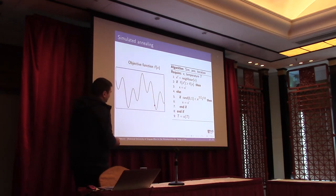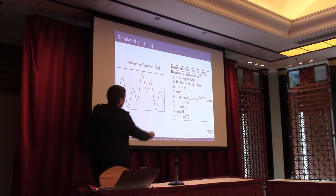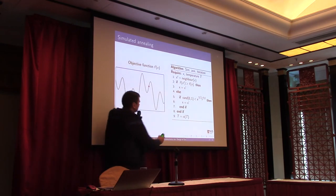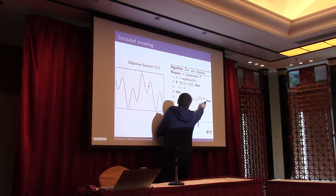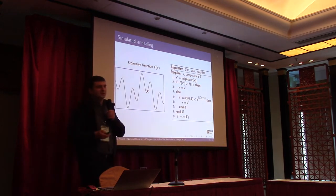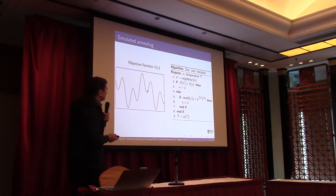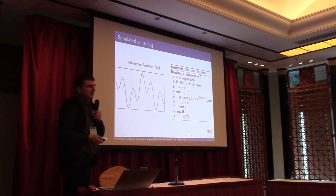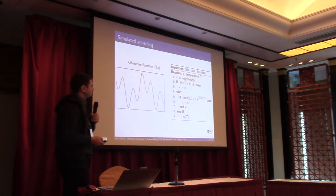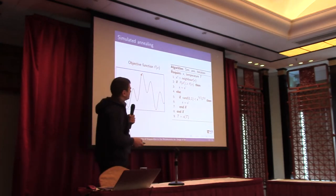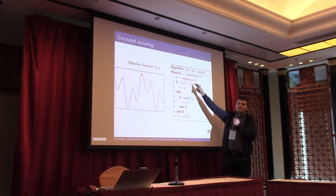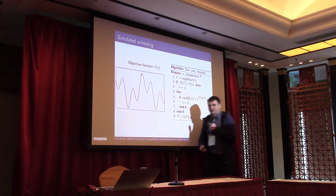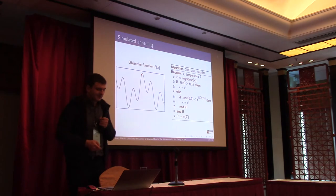With simulated annealing, you can even go down to a lower value occasionally, depending on the probability, and escape a local maximum to move to another hill and eventually find the global maximum. The parameters of simulated annealing that we need to define are: the neighborhood function, the initial temperature T, and the cooling schedule — how we reduce the temperature over time. That's the whole algorithm.